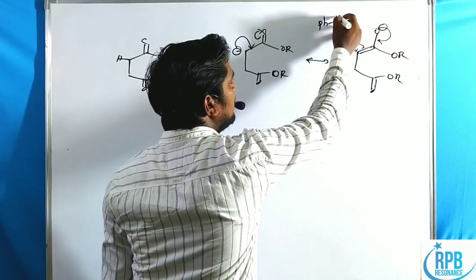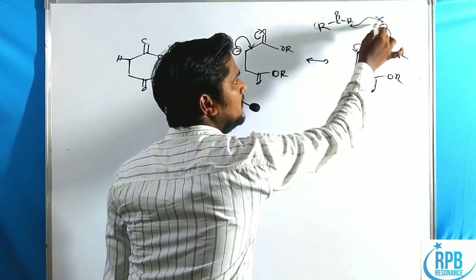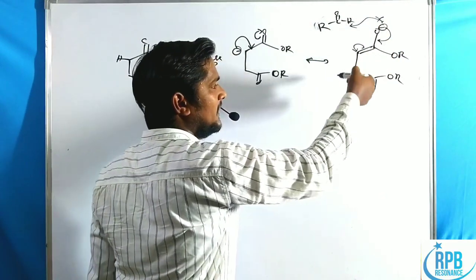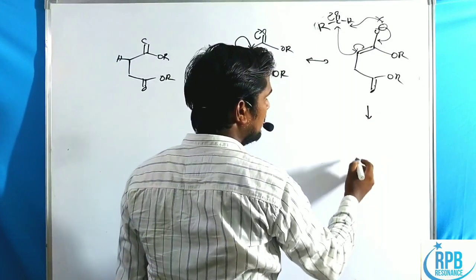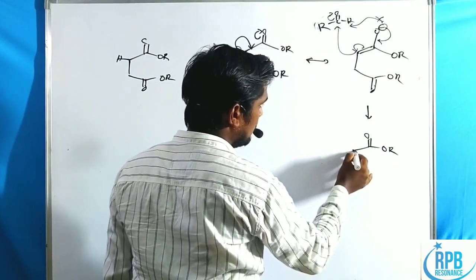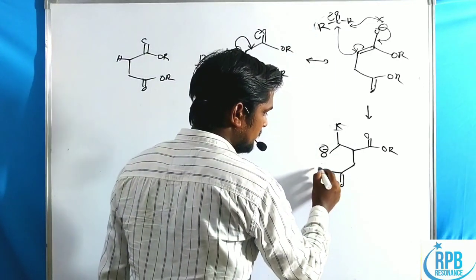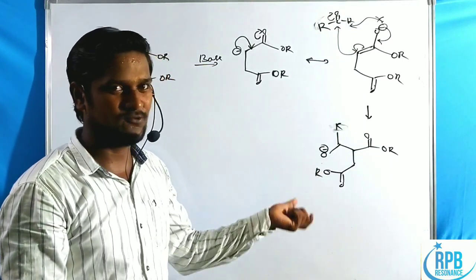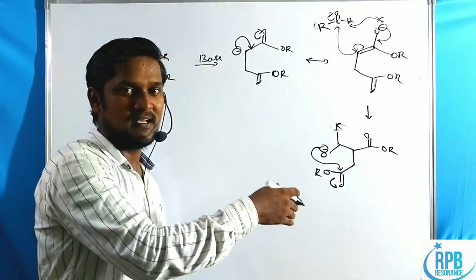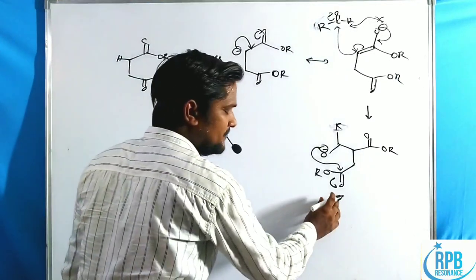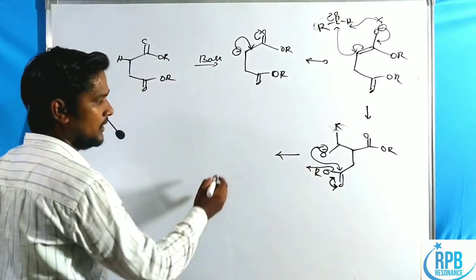The O⁻ cannot attack the electrophilic center of the carbonyl compound due to its lower nucleophilicity. Upon return of keto-enol tautomerism, the carbanion attacks the electrophilic carbonyl carbon, generating an O⁻. This O⁻ then attacks the carbonyl of the ester functionality, the bonded electrons shift toward oxygen, and then OR elimination takes place, forming the cyclic ester intermediate.